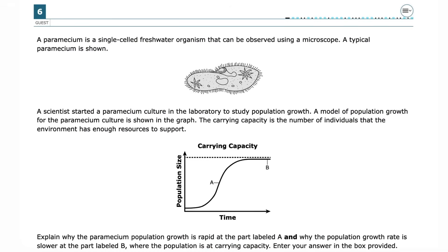The paramecium population grows rapidly at point A because there are plenty of resources, like food and space, available. Since there are only a few paramecia, they can reproduce quickly without running out of anything they need. At point B, the population growth slows down because the paramecia have reached the carrying capacity of their environment. Resources like food, space, and nutrients become limited, so the population cannot keep growing as fast. There are just enough resources to support the population, but not enough for it to grow much bigger.